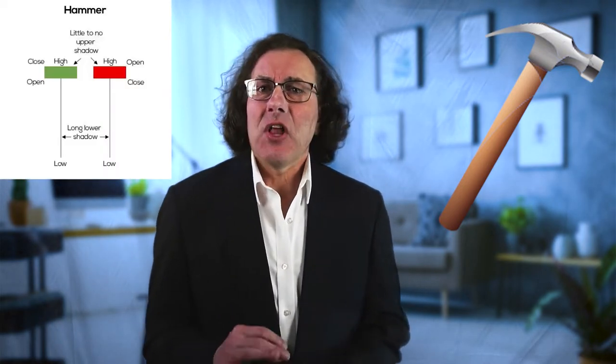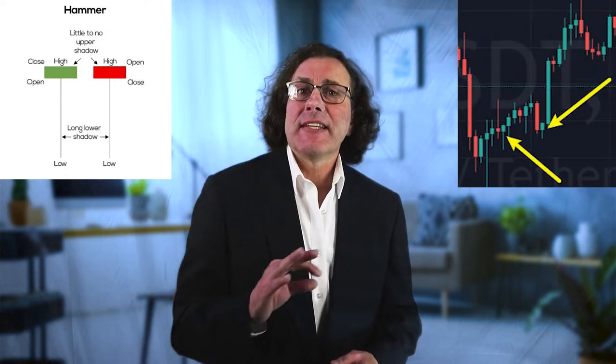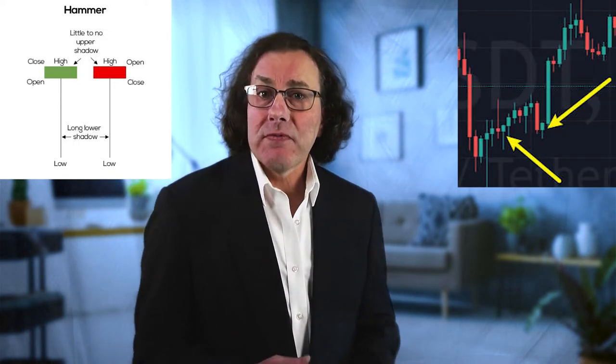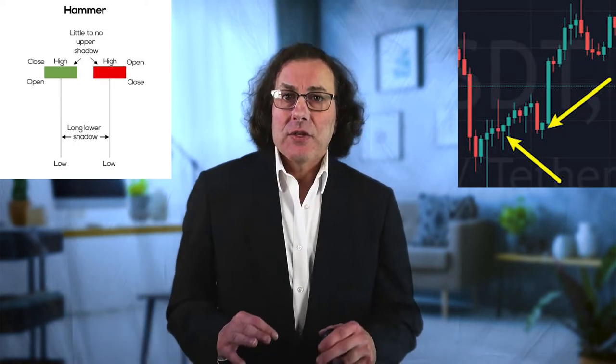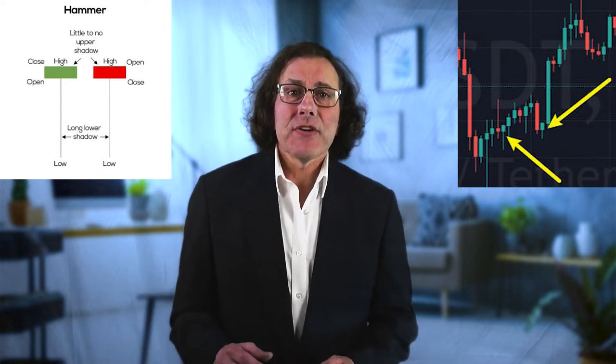Another type of candle is the hammer. Hammers have distinctively long bottom wicks and often mean that the asset is experiencing some serious buy action and that the price may soon be trending upward. Hammers often form at the end of a downtrend and can signal a possible reversal to the upside. The wicks indicate that buyers have absorbed all the selling pressure that occurred during that time.